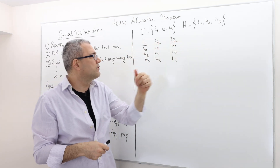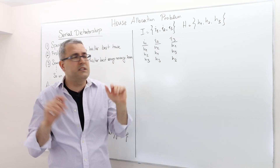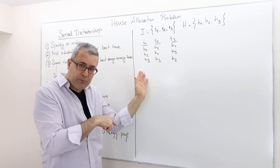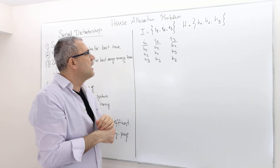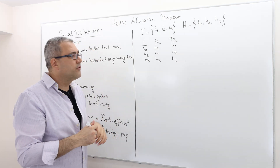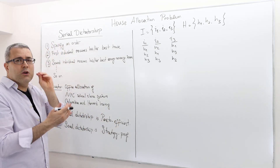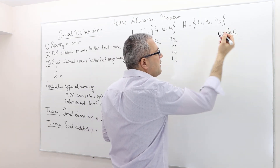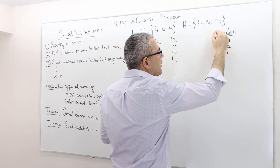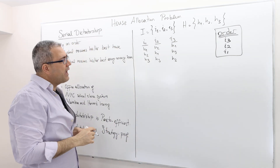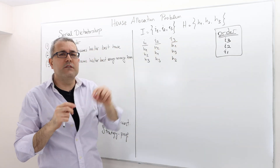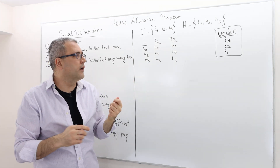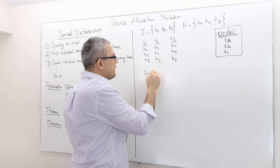We have three individuals, three houses, and these are the individuals' preferences. Let's suppose the individuals truthfully tell us their preferences — so these are true preferences and they truthfully reveal them. What is going to be the outcome? Remember, the first thing is the order. Let's suppose individual three should go first, then individual two, then individual one — that's the order we announce. According to this, individual three is the first to get his house, and his best option is house one. So individual three is going to be matched with house one.